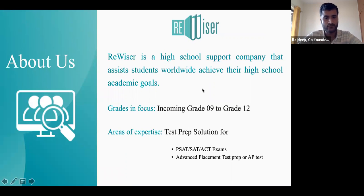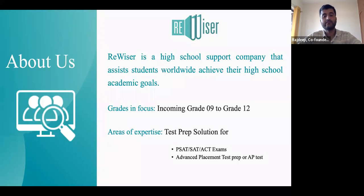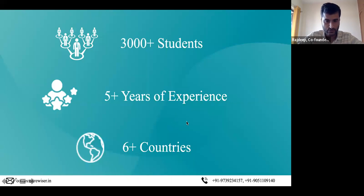Let me give you a quick brief about the company. We are a high school support company which helps students achieve their academic goals. We largely work with students from grade 9 to grade 12, and we have two major segments. The first is a test prep solution, wherein we help students for SATs, ACTs, PSAT, and advanced placement exams. We also have an academic tutoring vertical, wherein we help students with IGCSE, IB, and A-level tutoring, covering about 8 to 10 subjects. So far we've covered about 3,000 plus students, been in the industry for five plus years, and catered to more than six plus countries and about 15 plus cities across India.